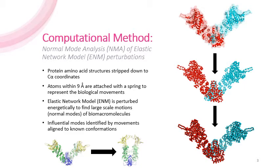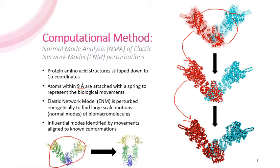For this project, we did a computational method known as normal mode analysis of elastic network model perturbations. These protein amino acid structures are stripped down to just the carbon alpha positions, and from those carbon alpha positions we can attach any of the carbon alphas that are within about nine angstroms of each other with a spring to represent the biological movements. Elastic network models are perturbed energetically to find the large-scale motions of the biomacromolecules. These influential modes are identified by the movements from one conformation to another, and we can see how those overlaps occur in the following slides.